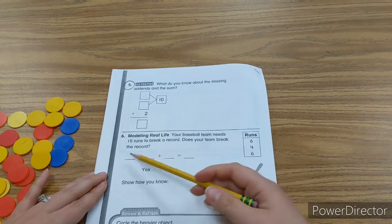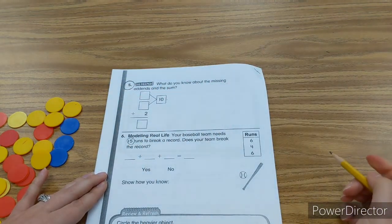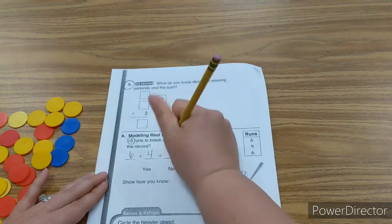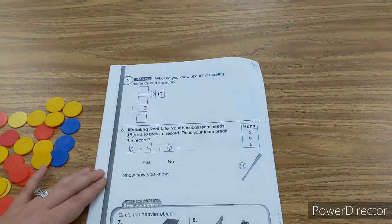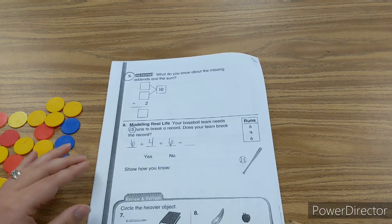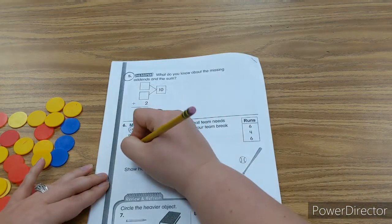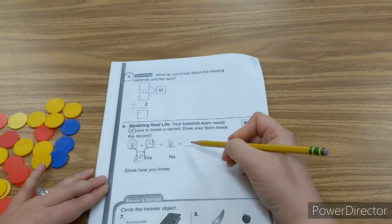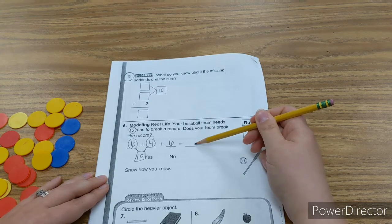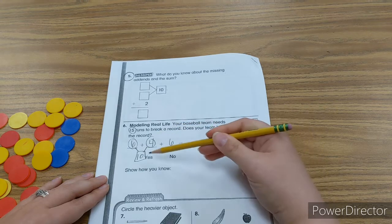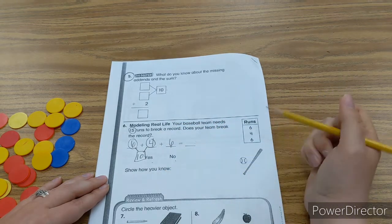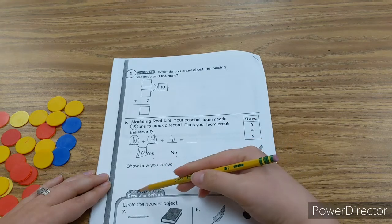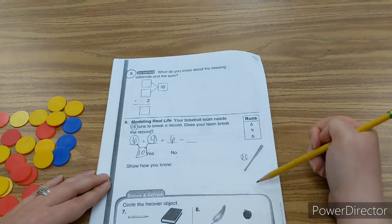Your baseball team needs 15 runs to break a record. Does your team break the record? So let's see. We have 6 plus 4 plus 6. Now I can see here where you might want to use a double. But since the goal of this is to do making 10, I want you to do 6 and 4. Make 10. And then show me what your sum is. I want you to tell me if yes we break the record or no we don't. And show me how you know. So go ahead and draw your circles. Show it. 6 and 4 makes 10. So 10 circles plus 6 circles equals how many.